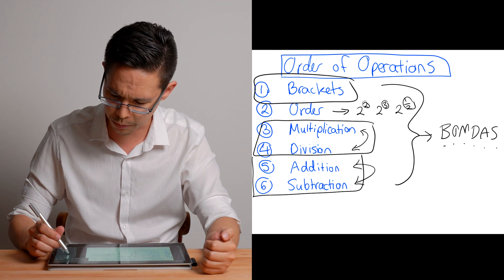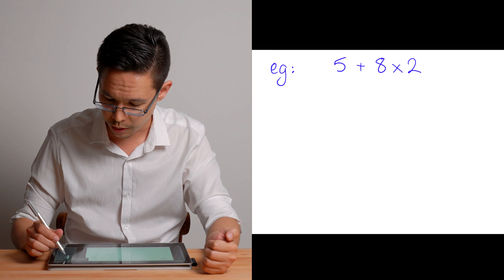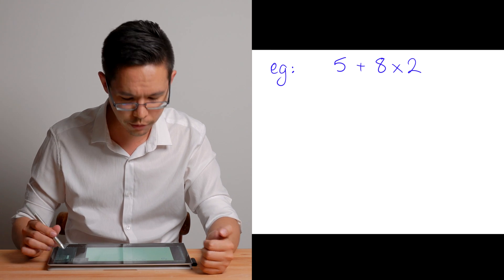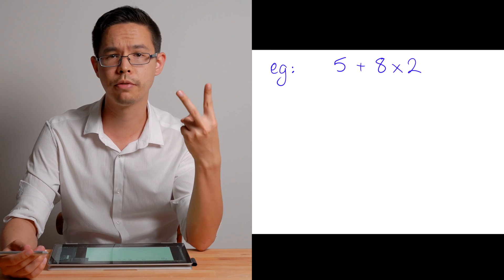Let's do an example. What can go wrong if you don't follow the order of operations? So here I've got a very simple problem, five plus eight times two. Now, depending on which way you do this, you'll get two different answers.